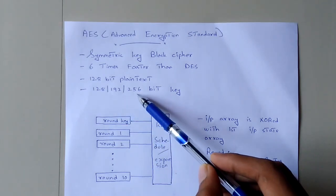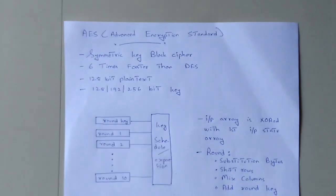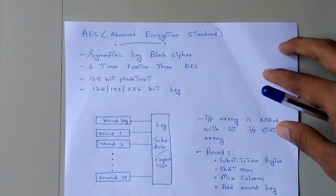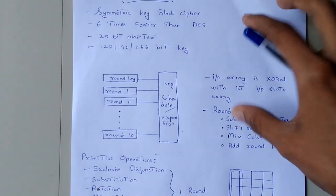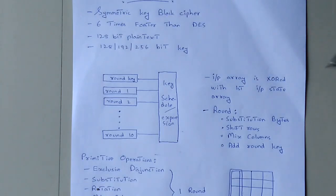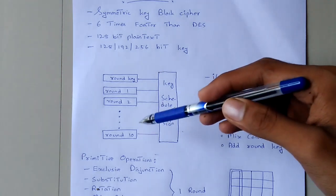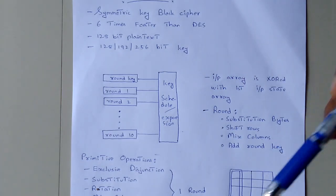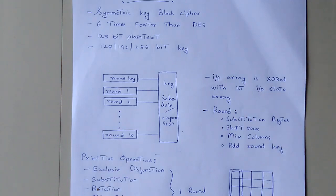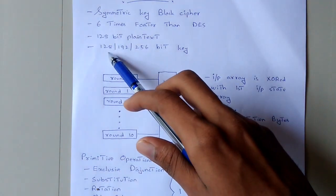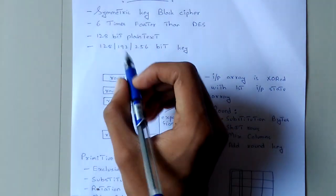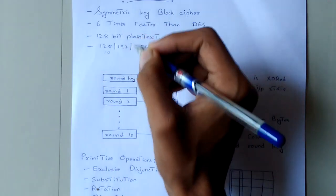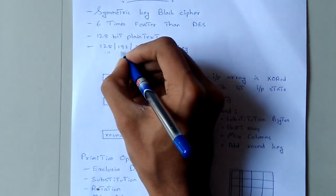For each key size, the AES algorithm remains secure. In AES, the key length determines the number of rounds. For a 128-bit key, the number of rounds is 10. For a 192-bit key, the number of rounds is 12.